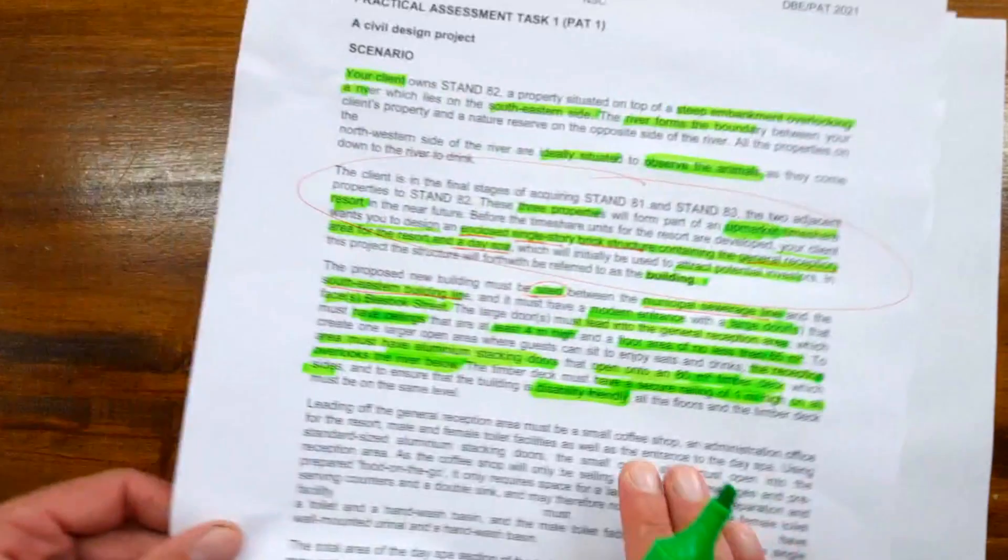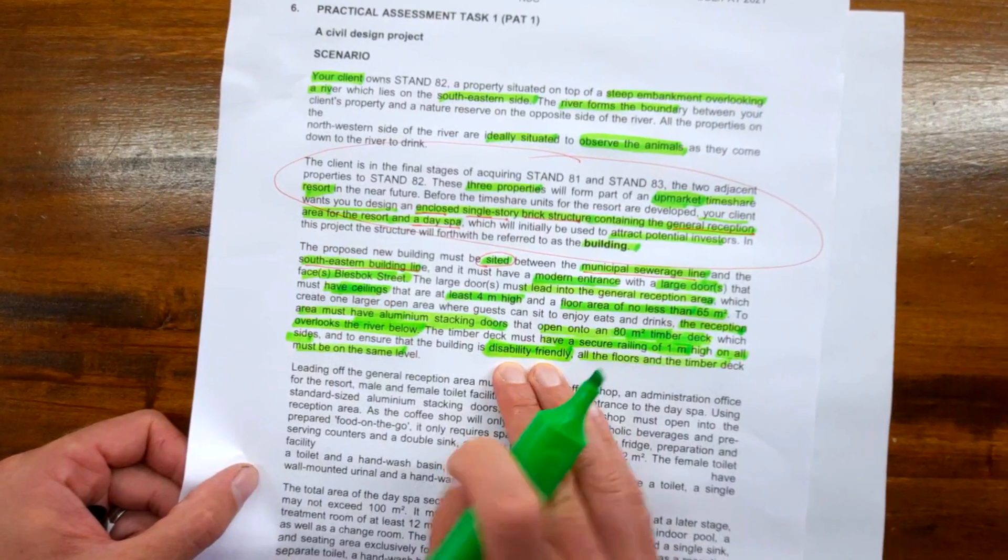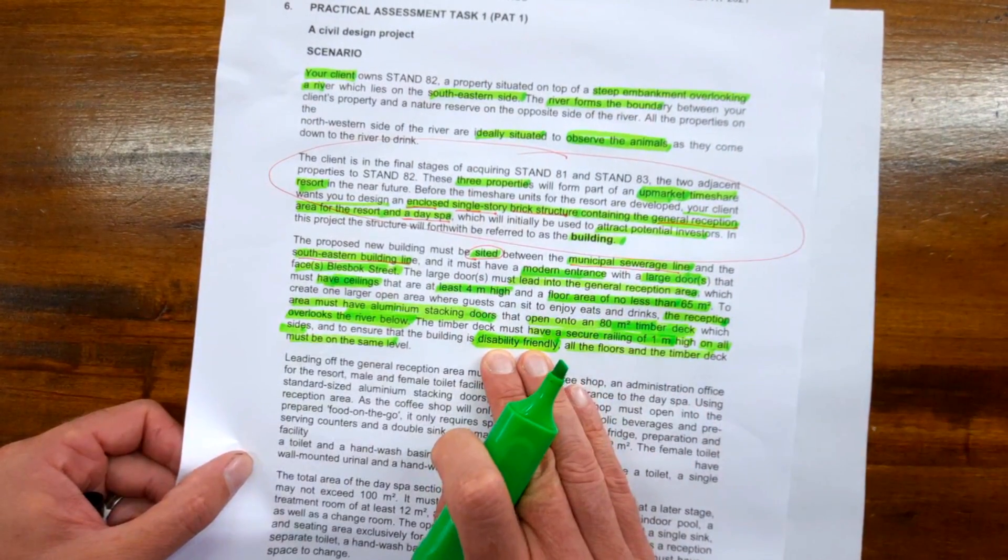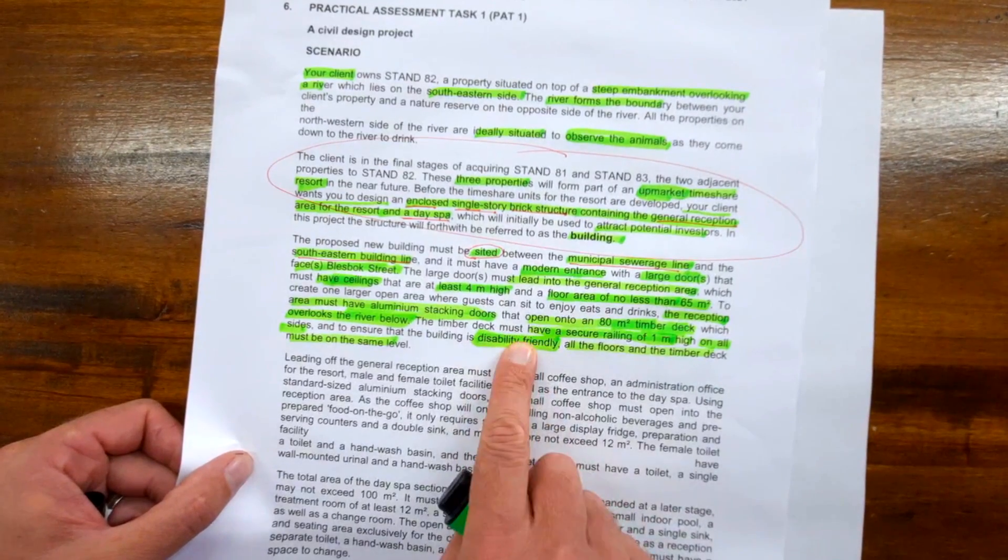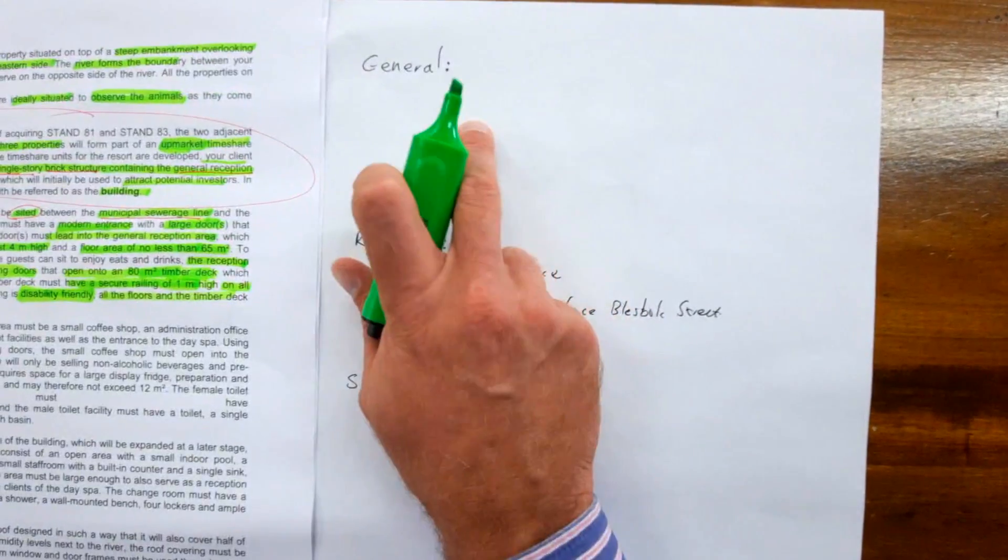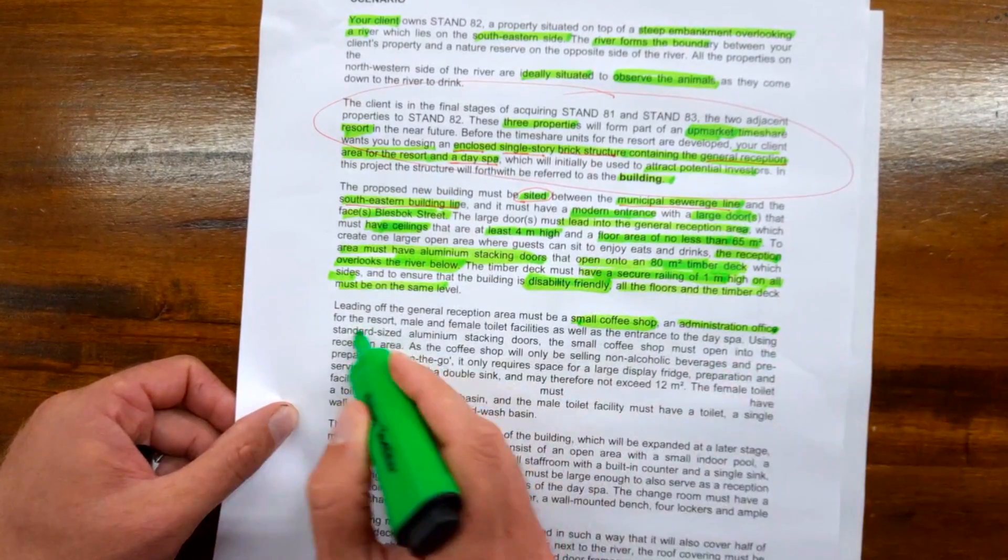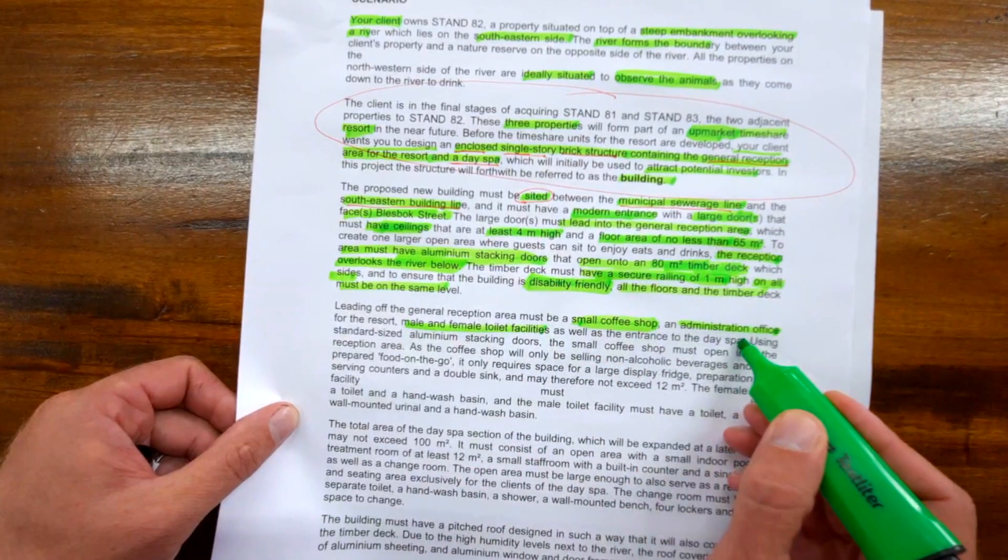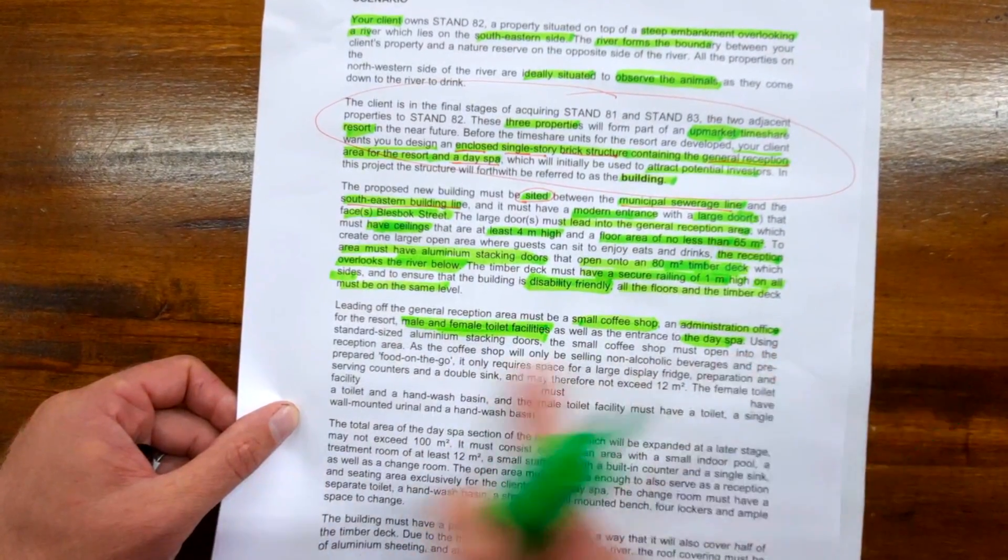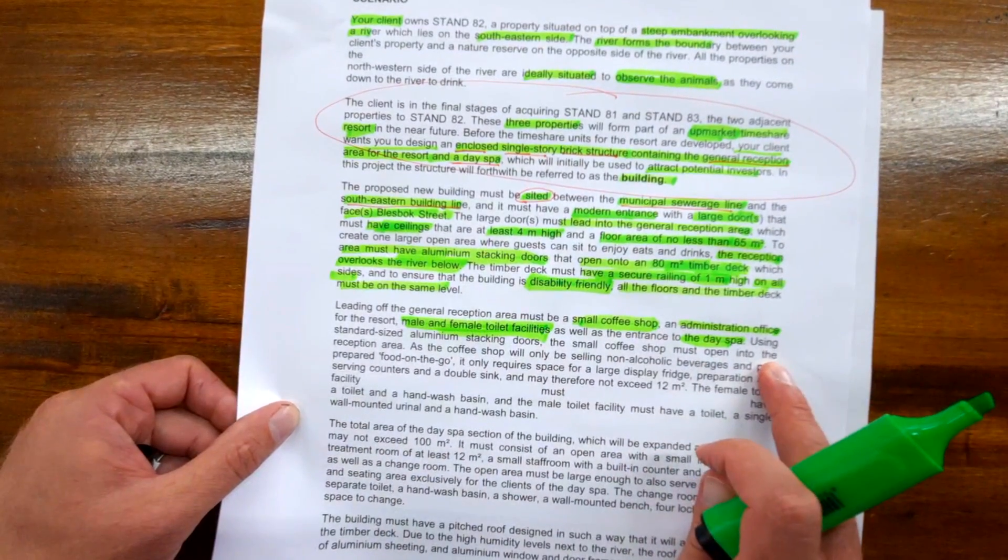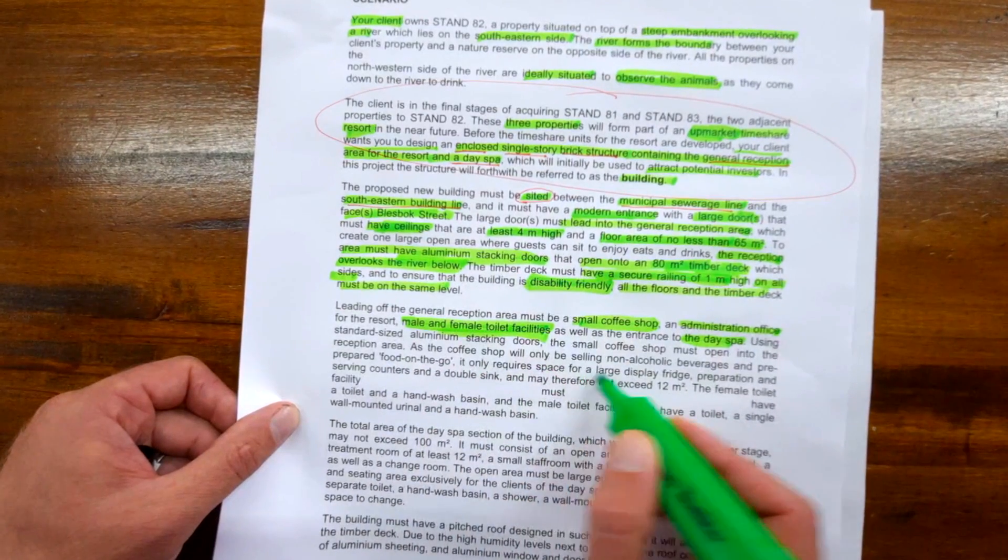For the timber deck, you can have another section: 80 square meters that must overlook the river below. The timber deck must have a secure railing one meter high on all sides. To ensure the building is disability friendly—that's a specification for the entire building under general—all floors and the timber deck must be on the same level. Disability friendly implies bathroom and entrance must have wheelchair access.